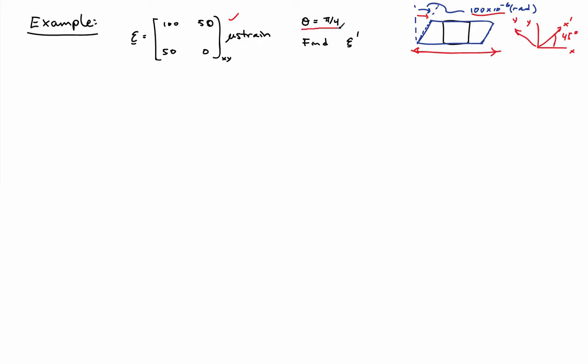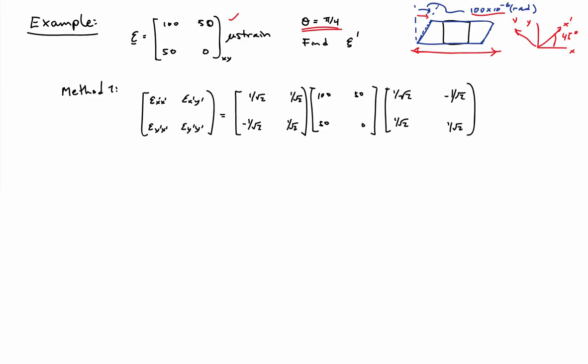Let's find the strain components in this 45-degree oriented coordinate frame, and we'll do it two ways. Method one is to use the rotation matrix technique. We have epsilon prime equal to R epsilon R transpose. Here I have epsilon as the matrix with entries 100, 50, 50, 0.